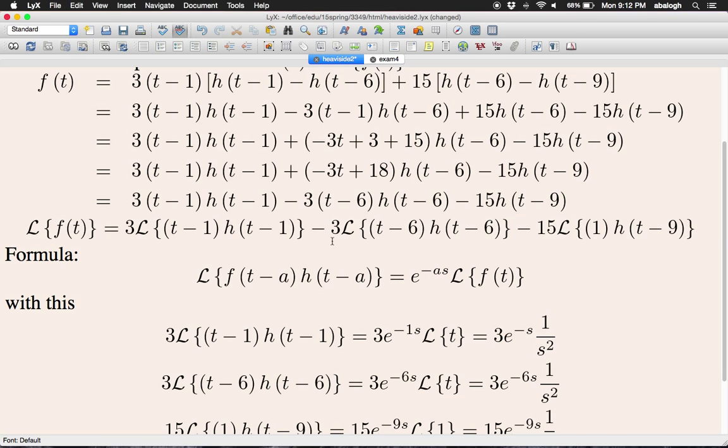The next term: 3 times the Laplace transform of t minus 6 times h of t minus 6. Now a is 6, so we have e to the minus 6s, and we have to take the Laplace transform of t, the part without minus 6. The Laplace transform of t is 1 over s squared.